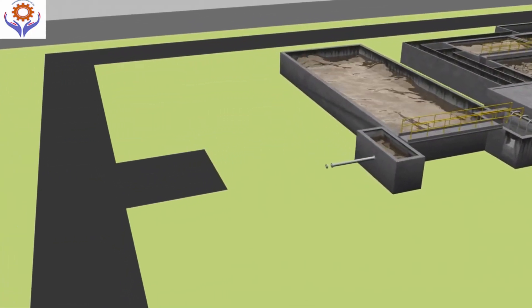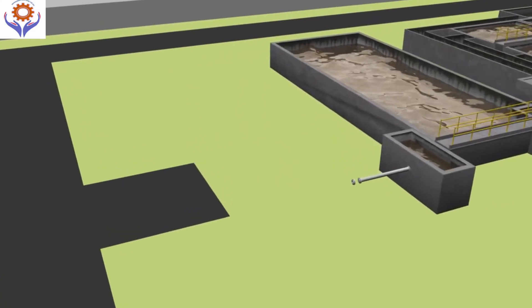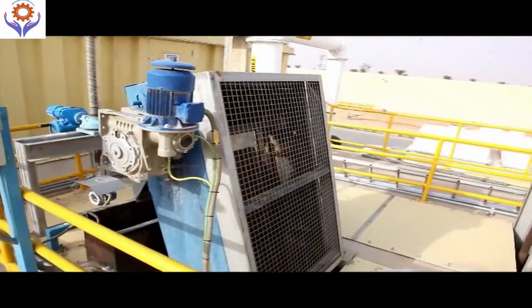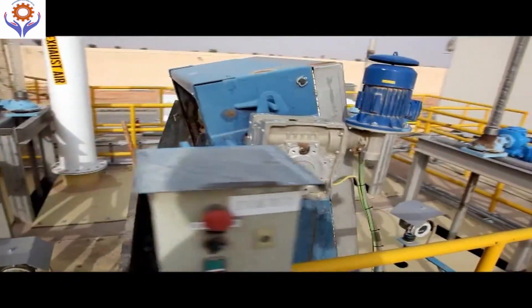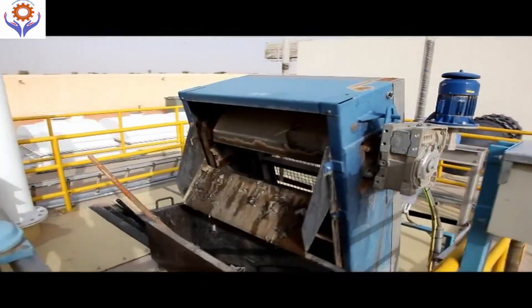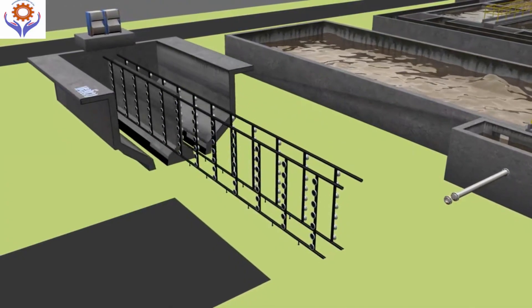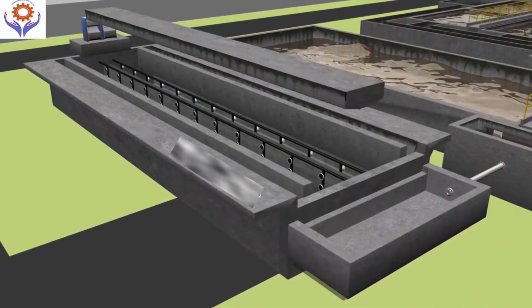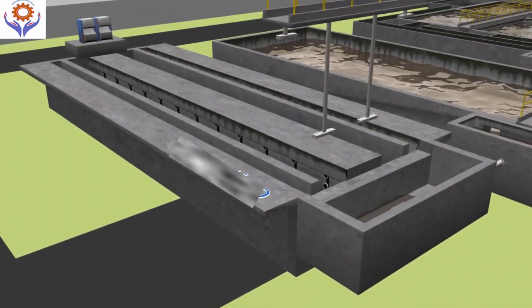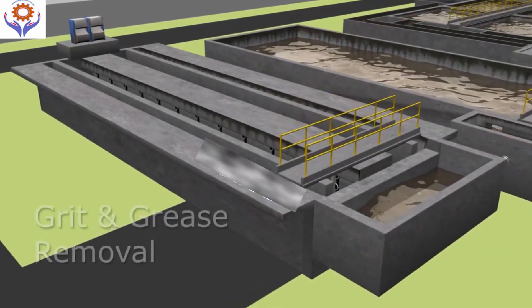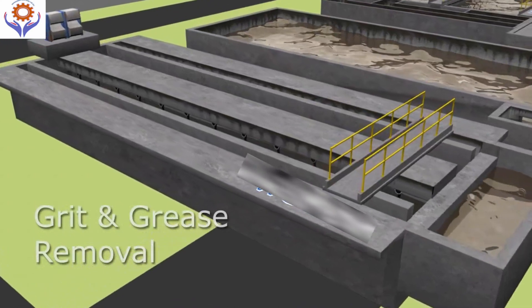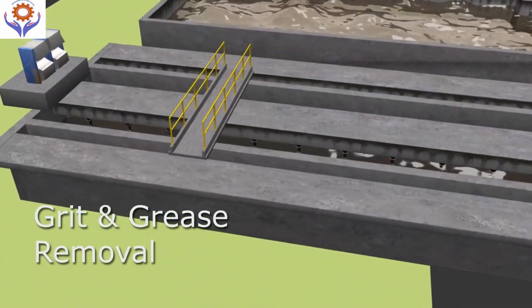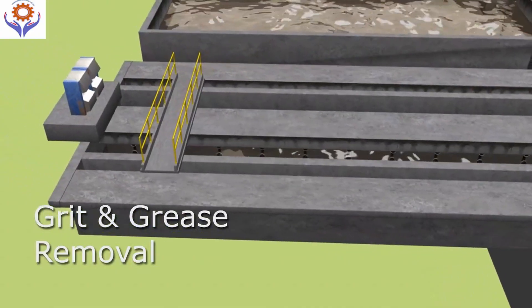Grit and Grease Removal. Wastewater first enters the inlet chamber. Large materials like plastic, cloths, and paper are removed by screens. Next, the water flows into the grit removal unit. Heavy particles such as sand and stones settle at the bottom. Oil and grease flow on the surface and are skimmed off. These stages protect pumps and pipelines from damage.